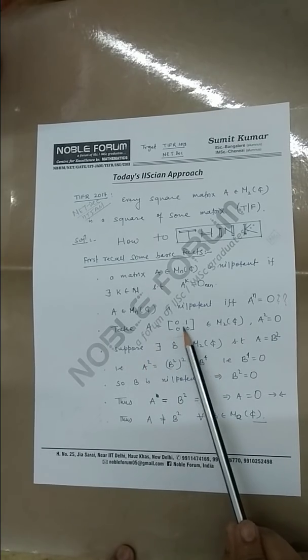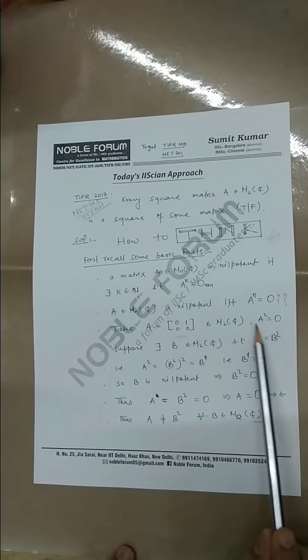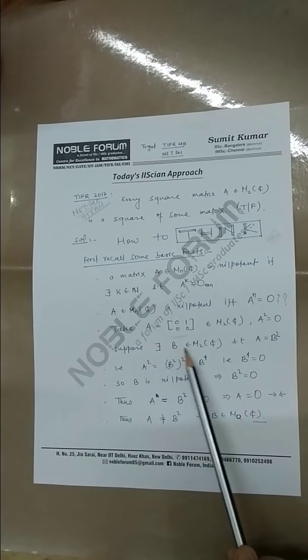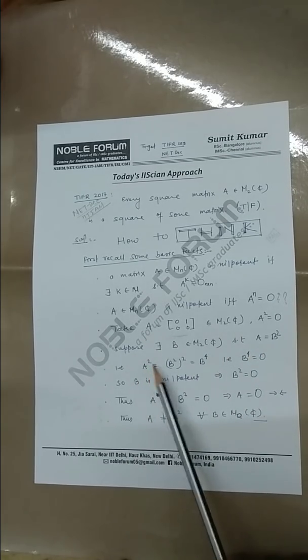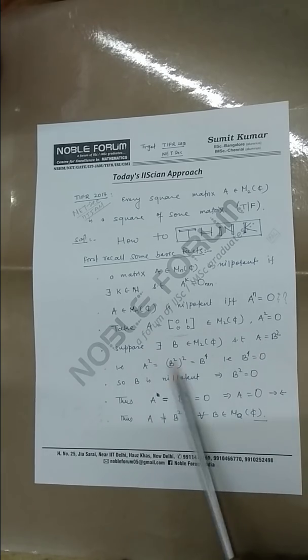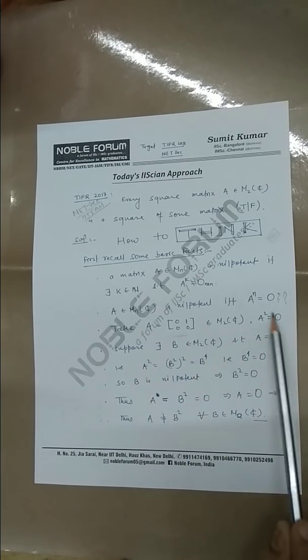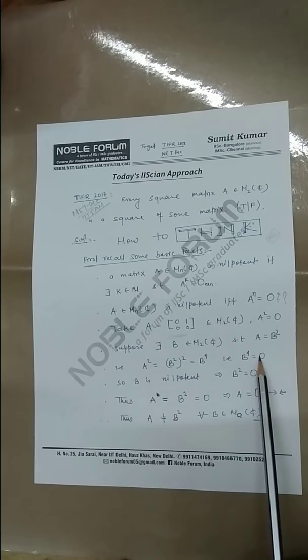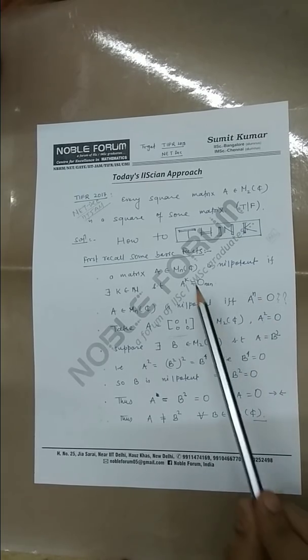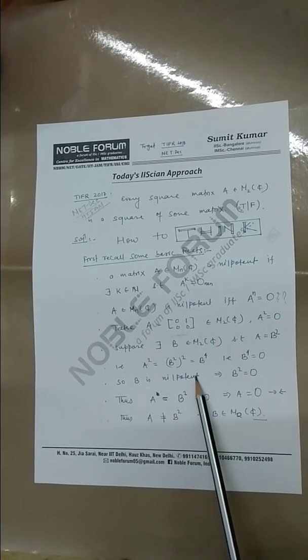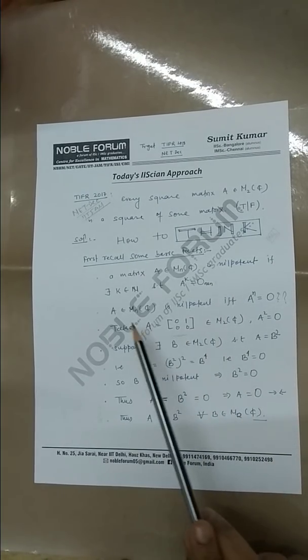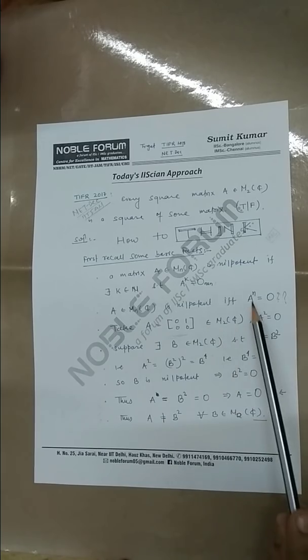Let's take this matrix [0,1; 0,0]. A squared is of course equal to zero. Suppose there exists B in M_2(C) such that A equals B squared. If you square both sides, you will get B to the power 4. As A squared equals zero, this means B to the power 4 equals zero. If B to the power k equals zero, this means B is nilpotent.